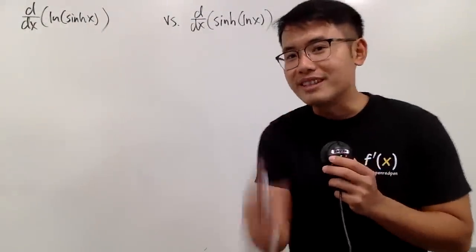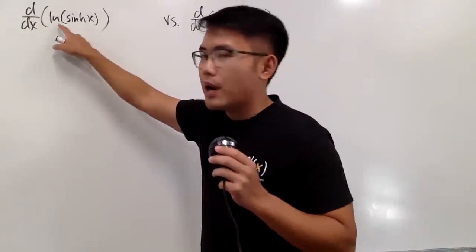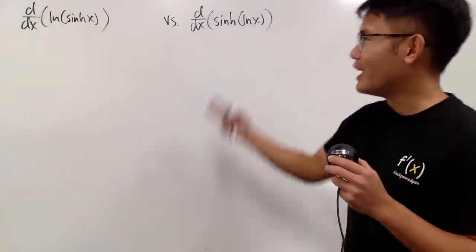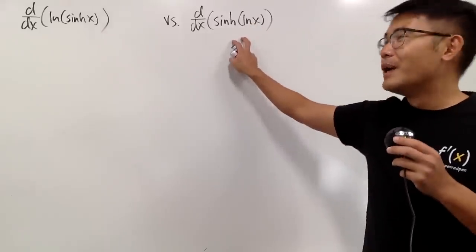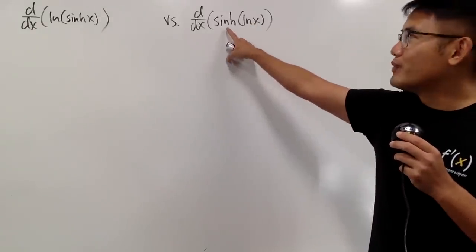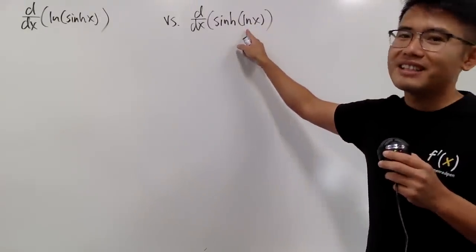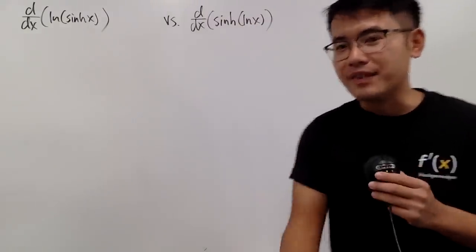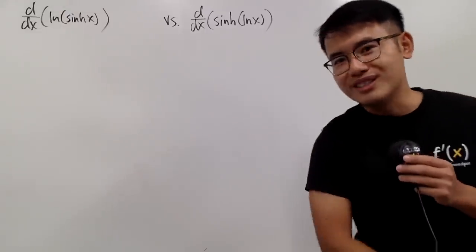We have two derivative equations. The first one is the derivative of ln of sinh x. And for the second one, we just switch the order — we have to take the derivative of sinh of ln x. As always, please pause the video and do the easier one first.